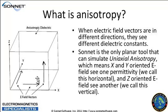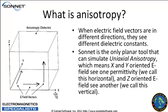Sonnet is the only planar tool that can simulate anisotropy. Sonnet does uniaxial anisotropy, which means the x and y directions are going to have one permittivity — we call that epsilon horizontal — and the z direction is going to have another separate permittivity, which is vertical. So with dielectrics, we've got two different permittivities: one for horizontal electric fields and one for vertical electric fields.